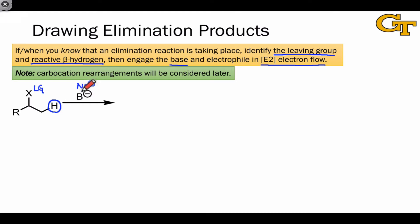E2 electron flow is rather unique in that it involves two distinct orbital interactions: an N to sigma star proton transfer type interaction, and a sigma to sigma star interaction really characteristic of the elimination process. This is an E2 elementary step.